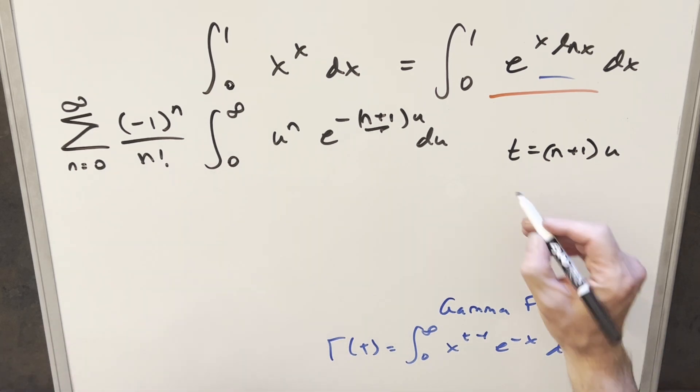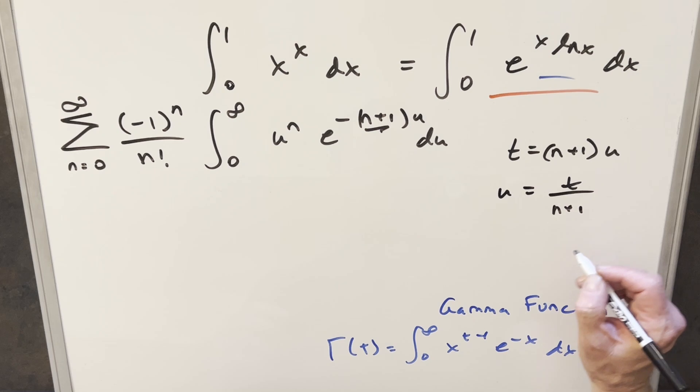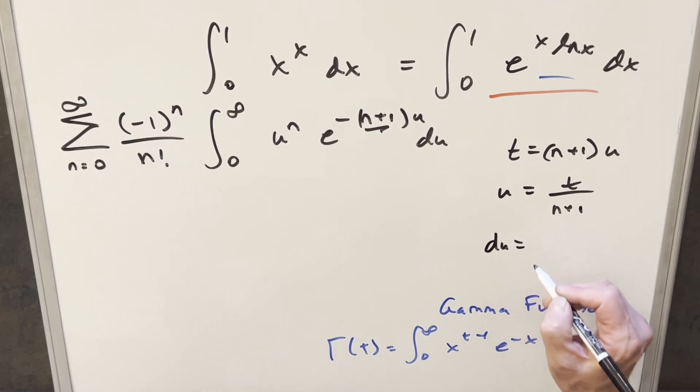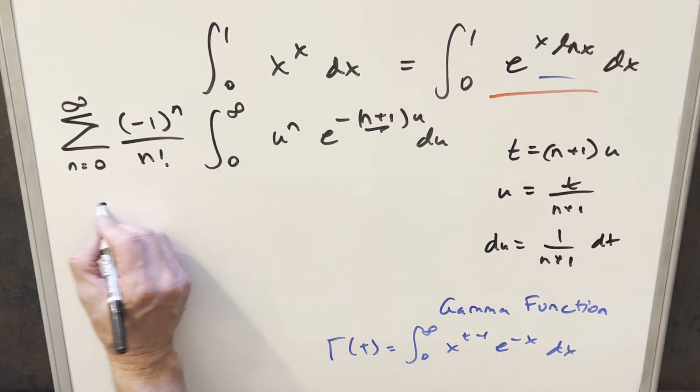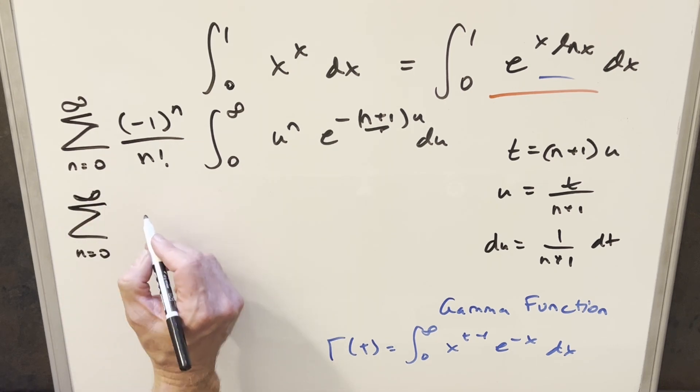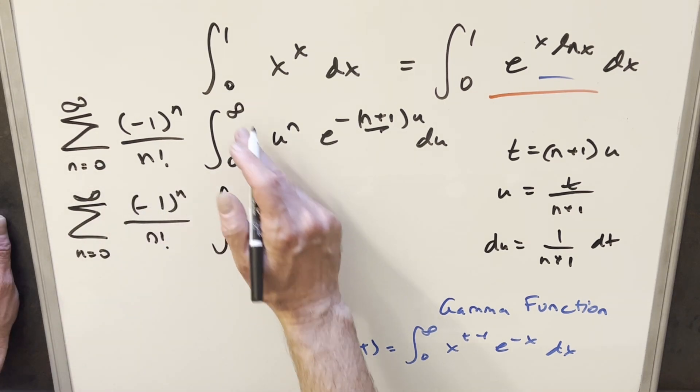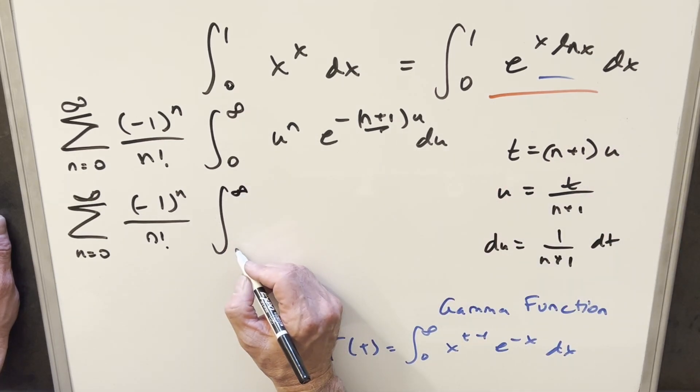Then let's get a value for u. So u is going to be just t over (n plus 1). We'll need that in a minute. And then let's take the derivative. So for du, this is just going to be 1 over (n plus 1) dt. So then going ahead with another substitution, we still have this sum out front. Now for the bounds, nothing's going to change because when you plug in infinity it's still infinity, you plug 0 and it's still 0. So that's going to be the same.